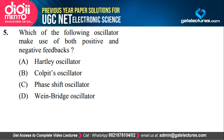Now look at the next question: which of the following oscillators makes use of both positive and negative feedback? The options are Hartley oscillator, Corbett oscillator, Phase-shift oscillator, and Wien bridge oscillator. The correct option is Wien bridge oscillator. In a Wien bridge oscillator, we have both positive and negative feedback. If you have looked at the architecture, you would know it uses both positive as well as negative feedback.